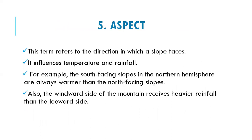The fifth factor is aspect, which refers to the direction in which a slope faces. This influences both temperature and rainfall. For example, south-facing slopes in the northern hemisphere are always warmer than north-facing slopes. Also, the windward side of a mountain receives heavier rainfall than the leeward side — the windward side faces the moist wind.